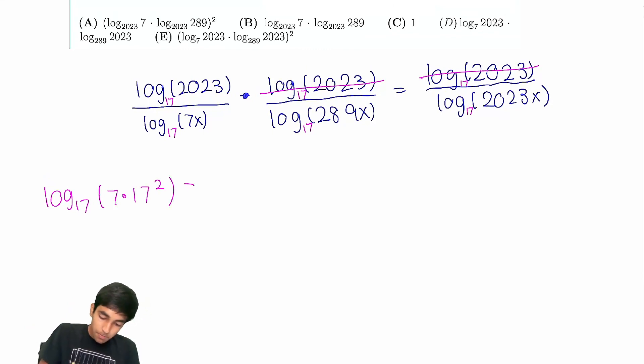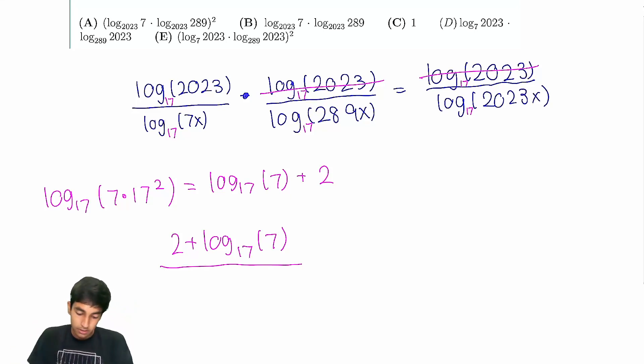But now we use our handy log rules. So log₁₇(7) plus log₁₇(17²), which is just 2. So now we have 2 plus log₁₇(7) over log₁₇(7x), which is just log₁₇(7) plus log₁₇(x).